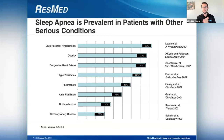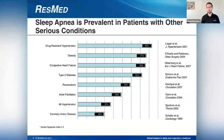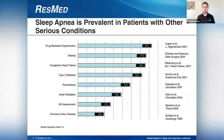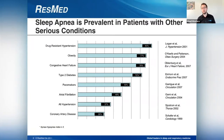I want to bring your attention to four large medical comorbidities. At the bottom: all hypertension — 37% of people with hypertension also had obstructive sleep apnea. Type 2 diabetes — 72% of patients with type 2 diabetes also had obstructive sleep apnea. Obesity — 77% of patients with obesity also had obstructive sleep apnea. And 83% of patients who take two or more medications for high blood pressure also had obstructive sleep apnea.